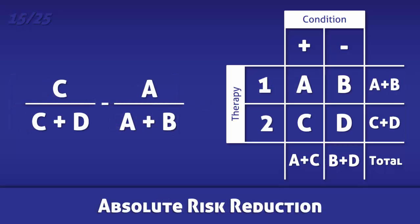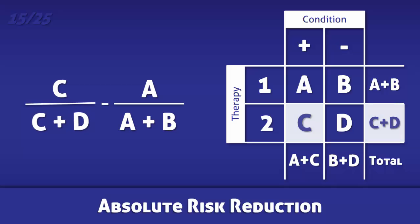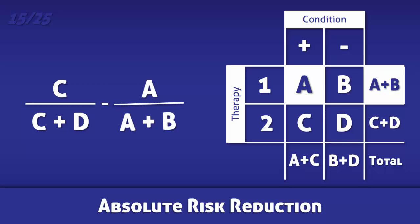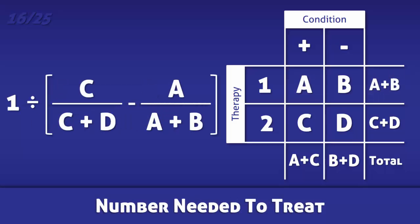For absolute risk reduction, subtract the incidence of the condition in individuals who received therapy 2 by the incidence of the condition in individuals who received therapy 1. The number needed to treat is the inverse of the absolute risk reduction, calculated by dividing 1 by the difference in incidence between therapy 2 and therapy 1.